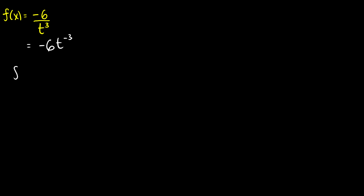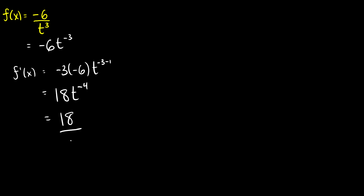When we take our derivative with the power rule, we take our power negative 3 and bring it down in front of the negative 6. So this will be negative 3 times negative 6, and then t to the negative 3 minus 1. That gives us 18 and t to the negative 4, which we can rewrite as 18 over t to the 4. That's our derivative of negative 6 over t cubed.